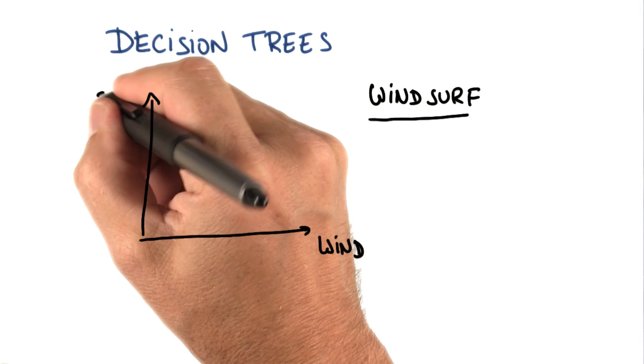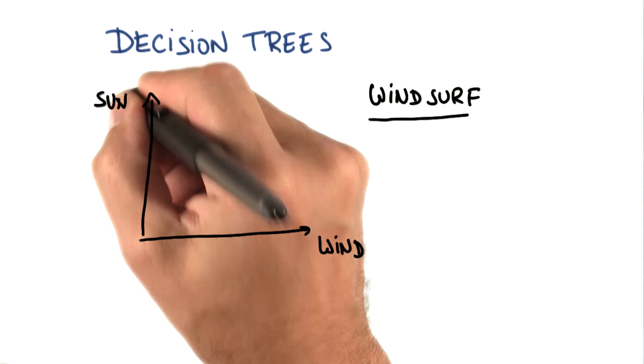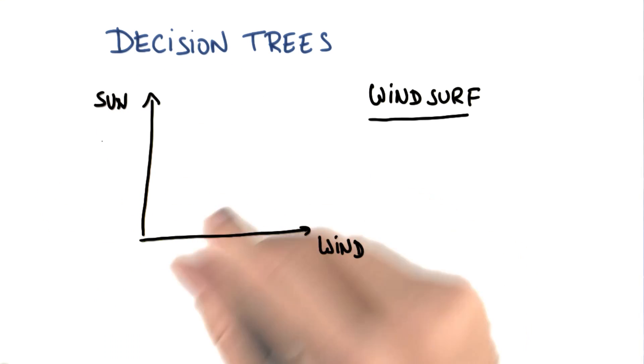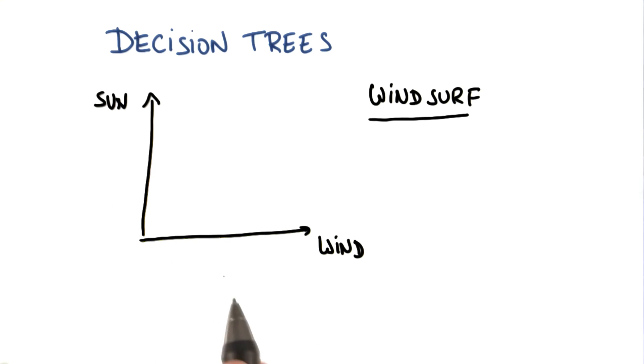And he also needs the sun because he doesn't really like surfing with overcast or in rain. So you would take all the days of last year and make data points.